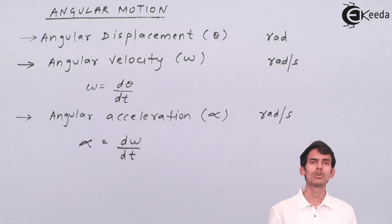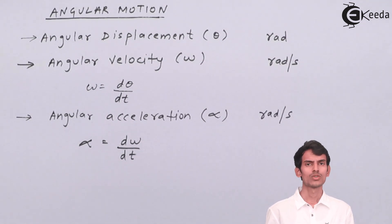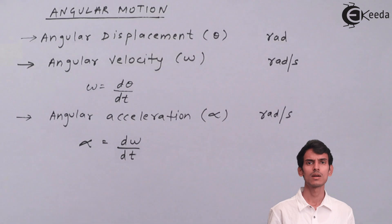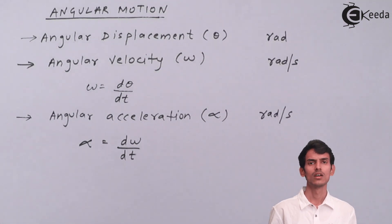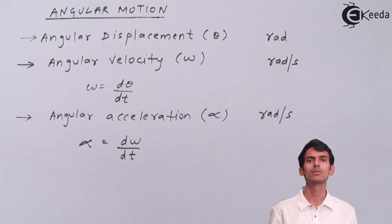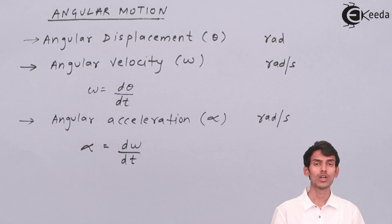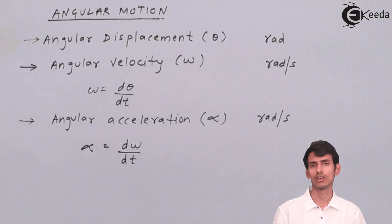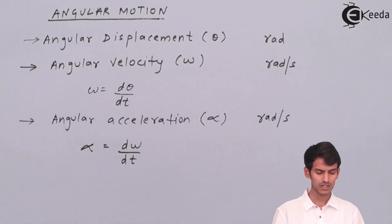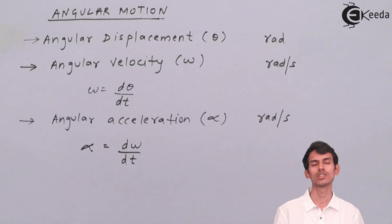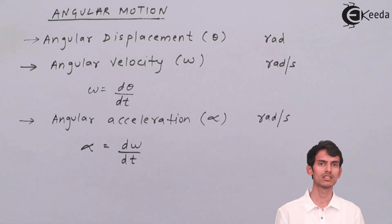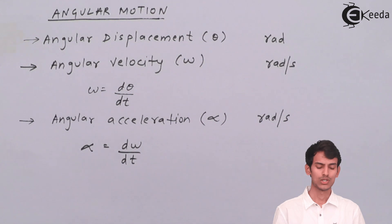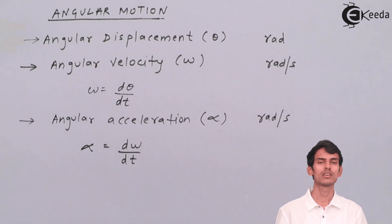So these are the three terms involved in angular motion. I hope you have understood the basics of linear and angular motion. Now we will go deeper into the chapter and understand how they are related to each other and how the velocities of different links change when a link moves. We've seen the units, the notations, and the mathematical formulas: omega is d theta by dt, and alpha is d omega by dt. Thank you so much.